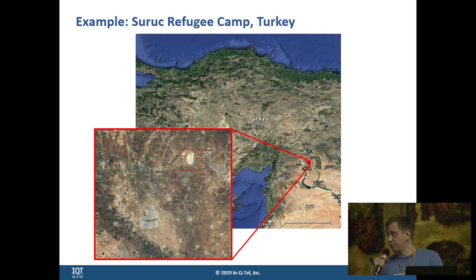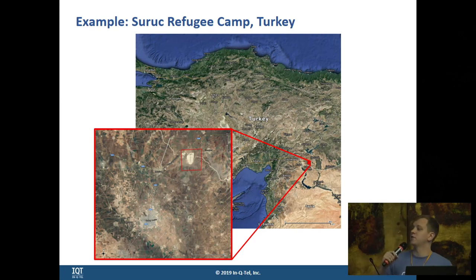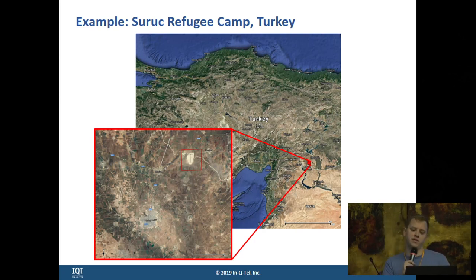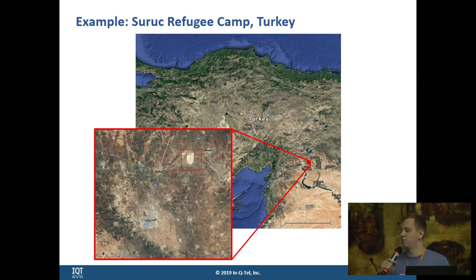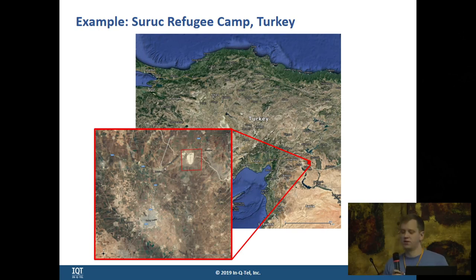I'll run through one more example here. This was a refugee camp north of Syria — specifically, this refugee camp was established in southern Turkey as a result of the Syrian civil war.